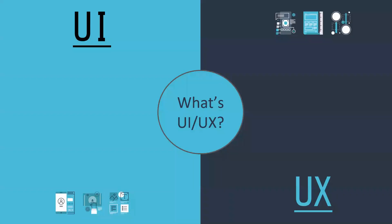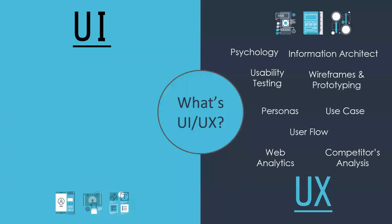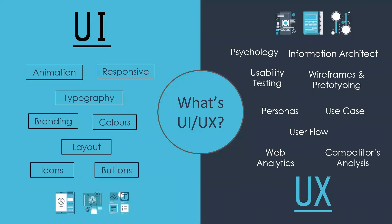Let's do a quick recap. Last week we mainly focused on the user experience section, covering topics like user psychology and research methodology like personas, user flow, wireframes, prototypes, etc. Today we will talk more on user interface design — things such as colors, layouts, icons, buttons — all the visual elements that you see on your user interface. This is our primary focus for today.